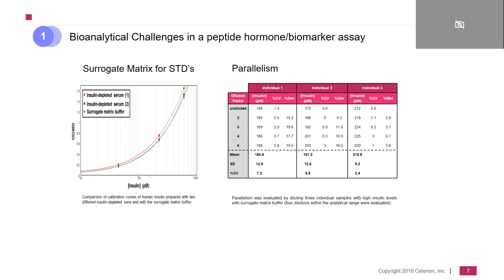Last but not least, as you all know, for biomarkers one of the key parameters is parallelism. As you can see depicted here to the right, measured in three individuals, we could nicely show parallelism at different levels, thanks to the robustness of this newly developed method — due also to these two specially developed buffers for the insulin measurement.